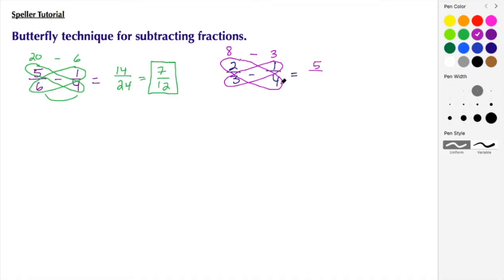With these two products, 8 minus 3, we're going to end up with 5, and then we multiply our denominators, 3 times 4 to get 12. So 2/3 minus 1/4 turns out to be a difference of 5/12.